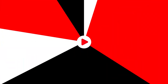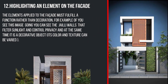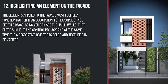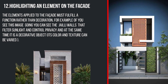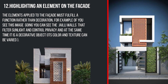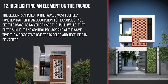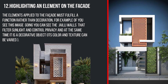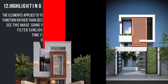The twelfth type is highlighting the elements on the facade. The elements applied to the facade must fulfill a function rather than just decoration — they should not be placed purely as decorative elements. For example, jali walls filter the sunlight and control privacy, while also serving as a decorative object. You can even change the jali colors and experiment with your own ideas.